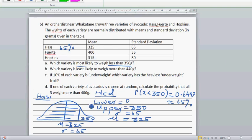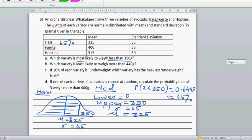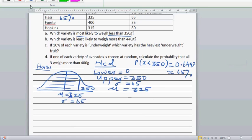Now for the next variety, let me use a different color. For the F variety, you know the mean is 400 grams and the standard deviation is 35 grams.